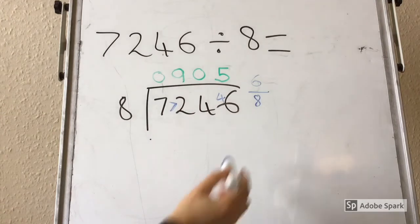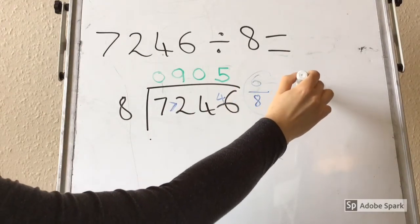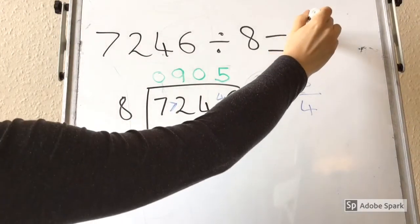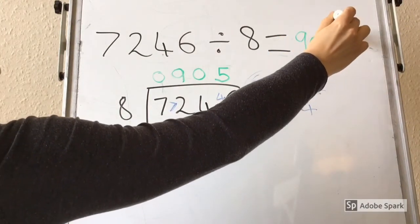If you are feeling confident with your fractions, you might know that 6 eighths is equivalent to 3 quarters. So you could write your answer as 905 and 3 quarters.